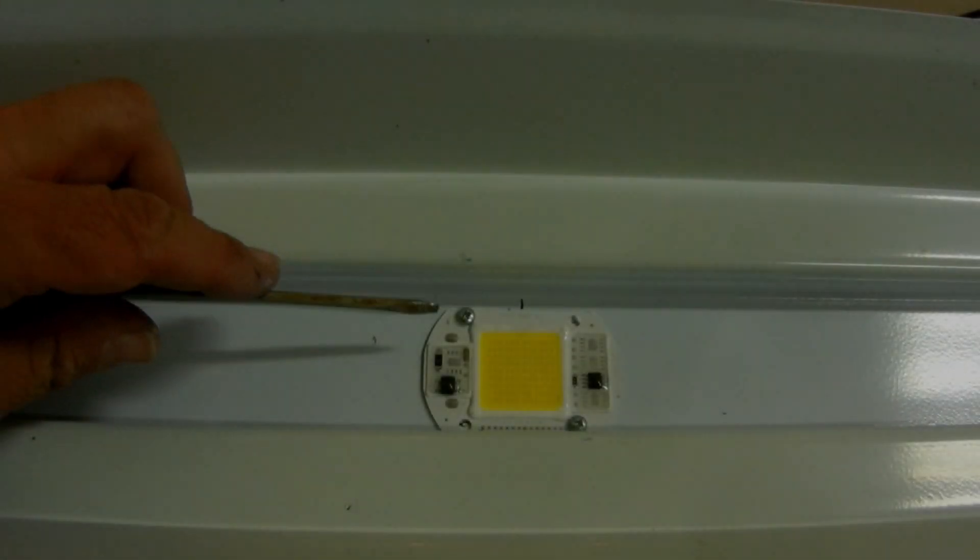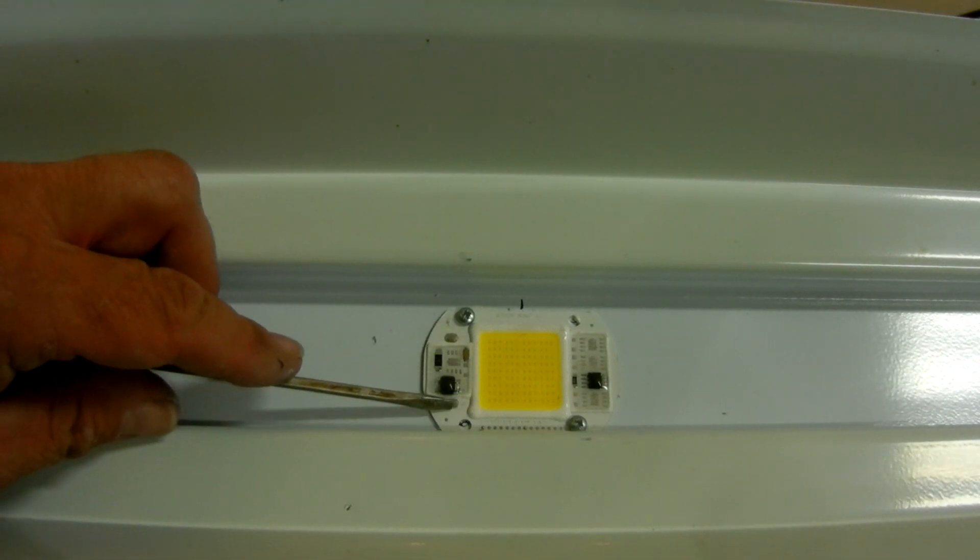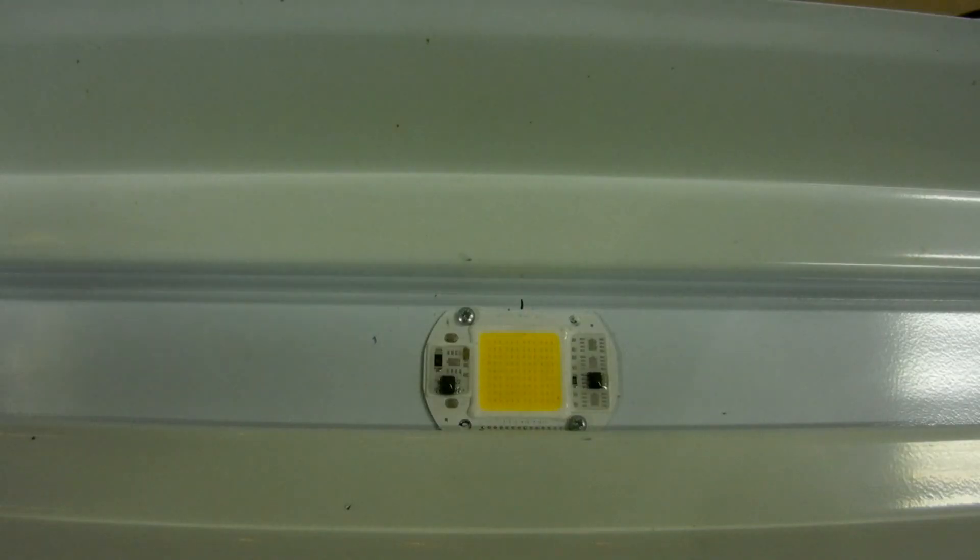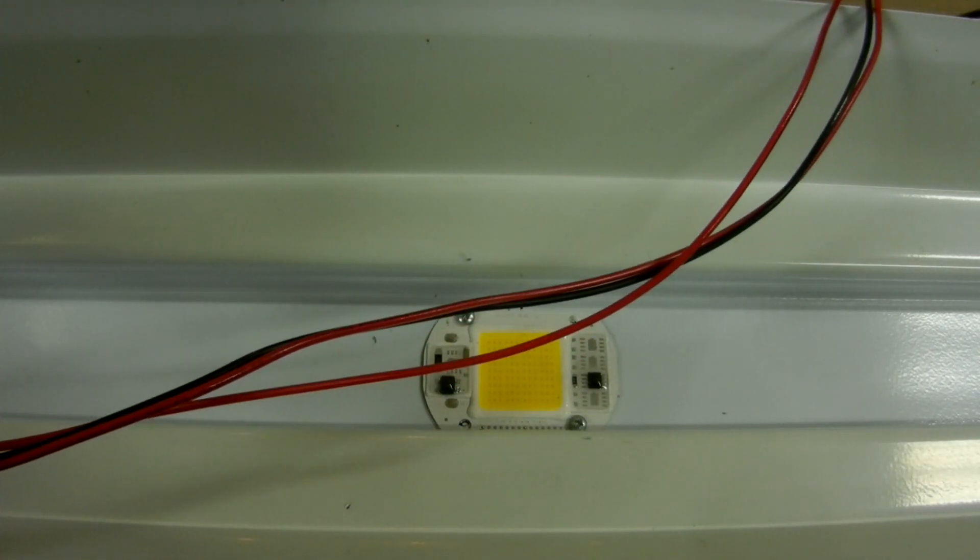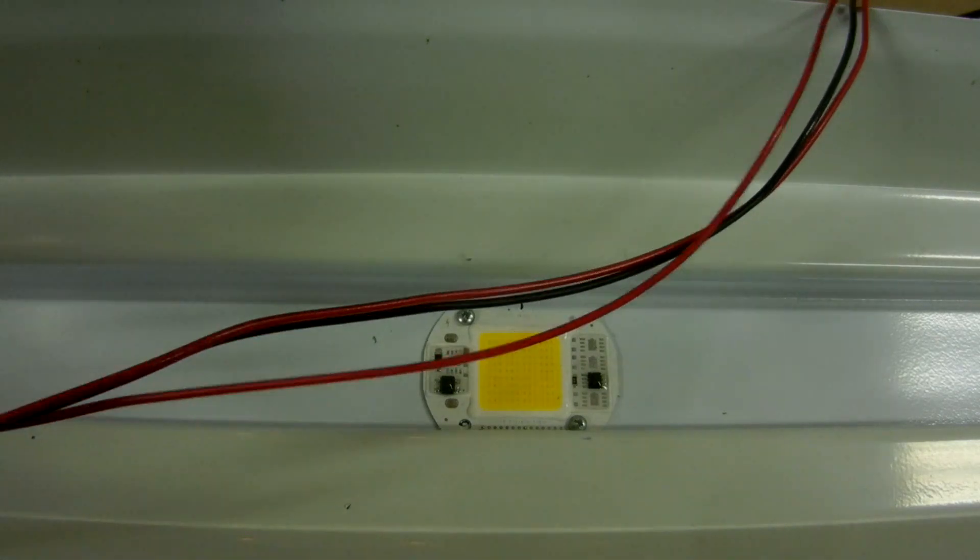So the power is hooked up to here and here, 110 volts, and I'm just going to use these wires that came in the original fixture, they'll work fine, and we'll daisy chain these guys together.